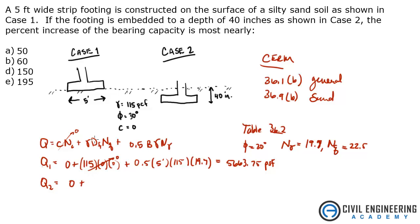Plus, now we have a depth of footing, so we have to include this term, we're not on the surface. So, we've got density of 115 pcf, times the depth of footing, which is 40 inches, and converting that to feet, I get 3.33 feet.